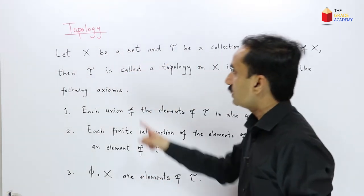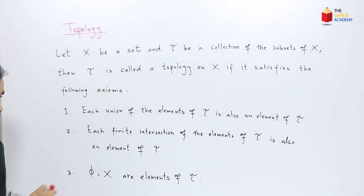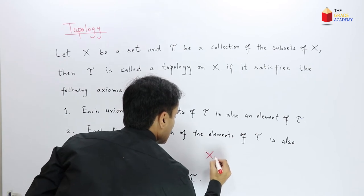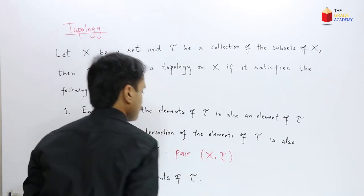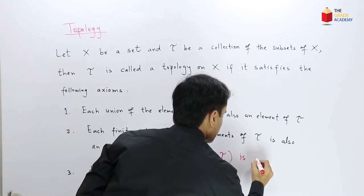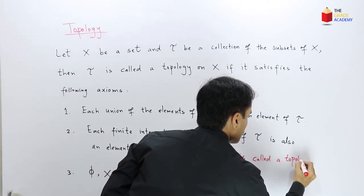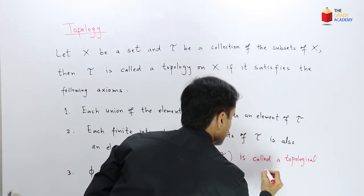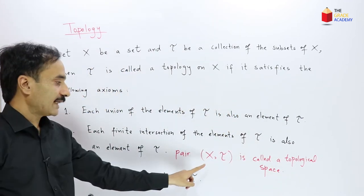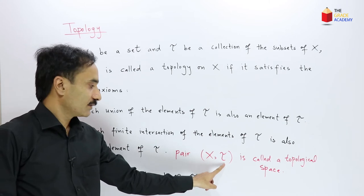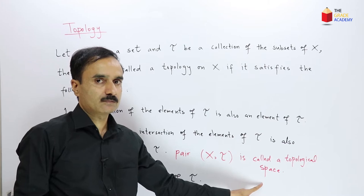It means both the empty set and the set X must belong to tau. Then the set tau is called a topology on X, and the pair (X, tau) is called a topological space. The set X together with the topology tau is called a topological space.